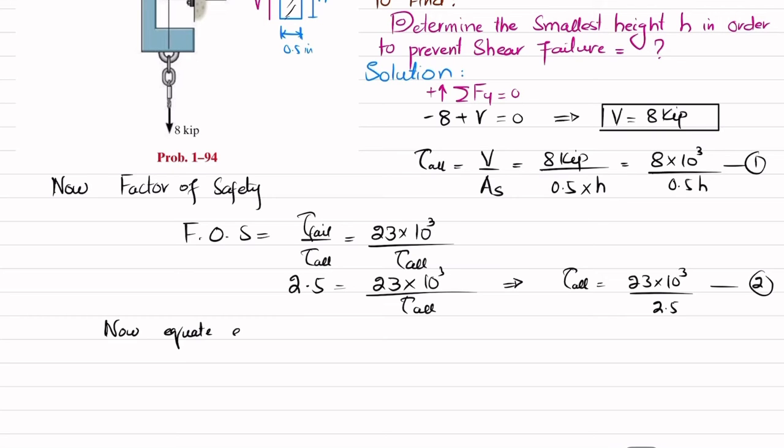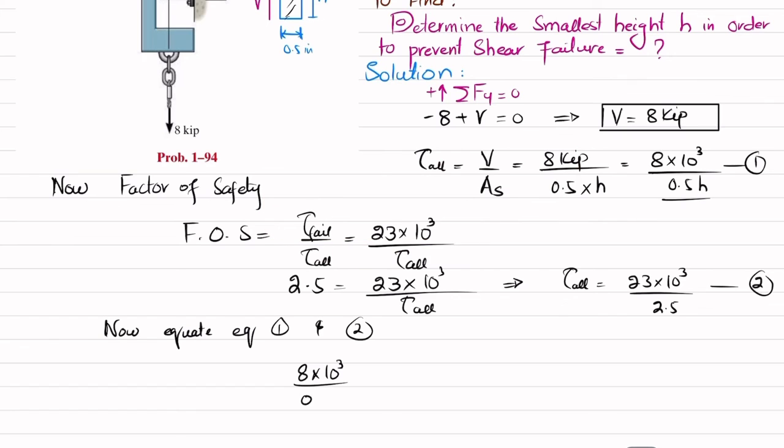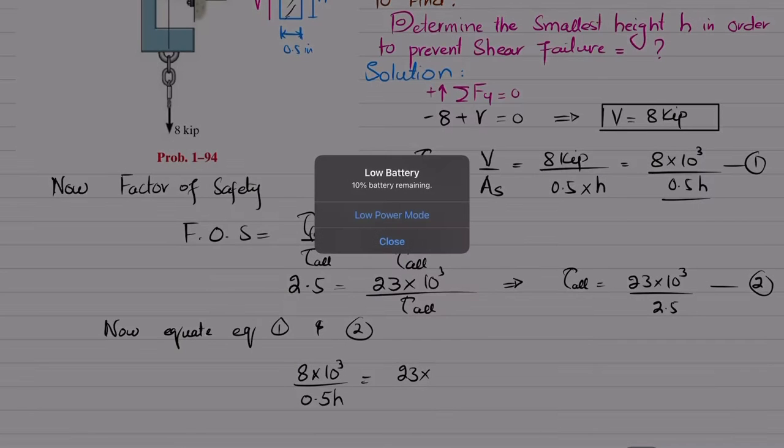Now equate equation one and two. So you will get equation one, which is equal to 8 × 10³ divided by 0.5h, is equal to 23 × 10³ divided by 2.5.